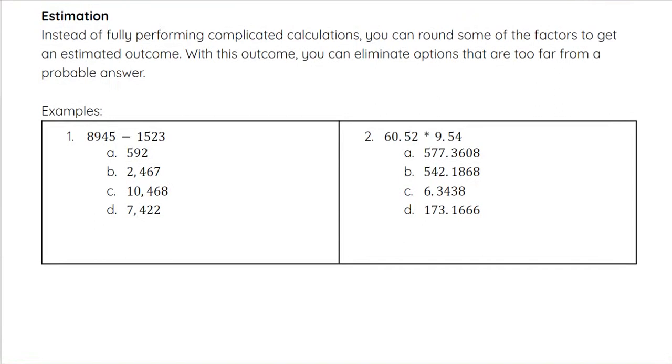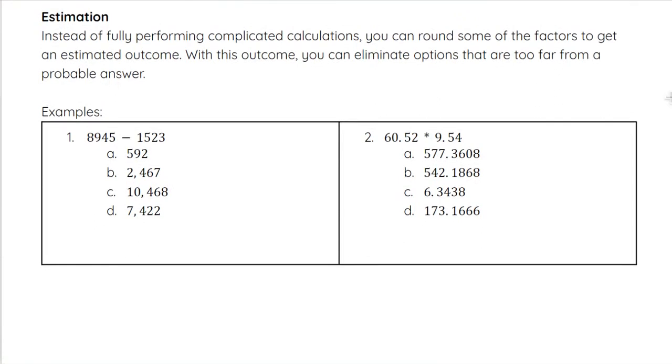Our next tactic is estimation. Instead of fully performing complicated calculations, you can round some of the factors to get an estimated outcome. With this outcome, you can eliminate options that are too far from a probable answer. For example, when we have 8,945 minus 1,523, I could round this to 9,000 minus 1,500 and subtract those.